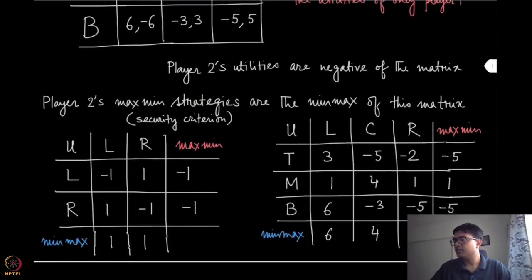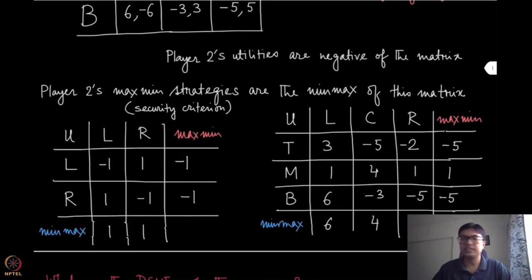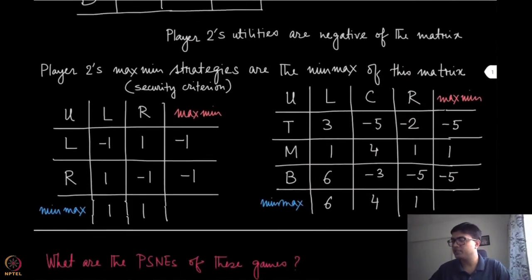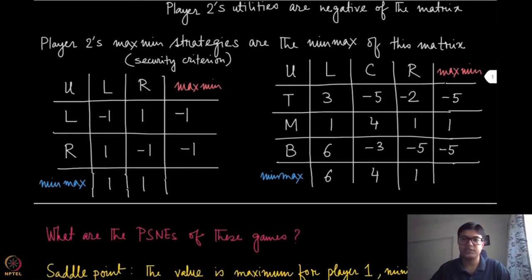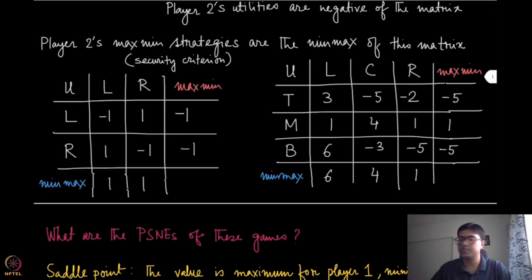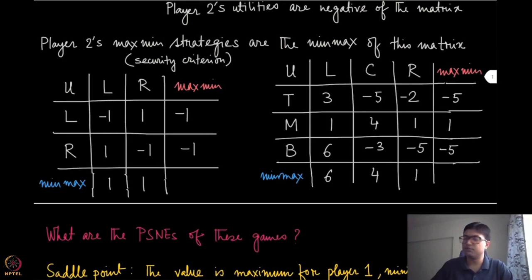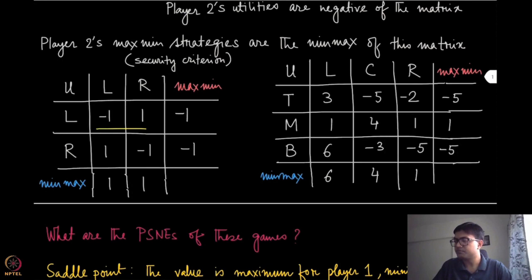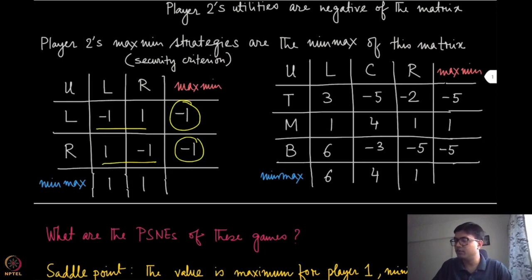Now let us look at the maxmin and minmax strategies for this matrix, which we have discussed in previous modules. If you look at the maxmin of this matrix U, in the penalty shootout game, the maxmin is found by first taking the minimum over the rows. The minimum of the first row is minus one and similarly the minimum of the second row is also minus one. So the maxmin value in this case will be minus one.